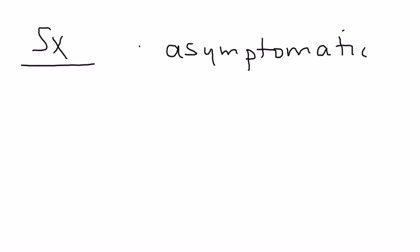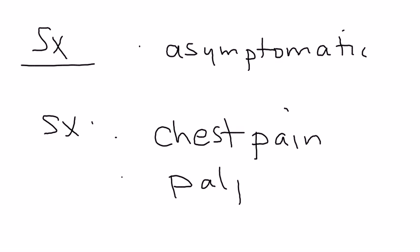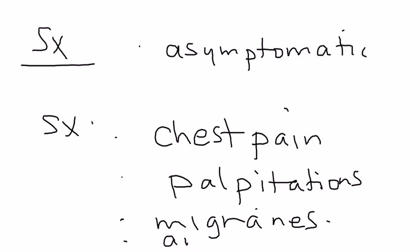So now let's get into some of the symptoms. Well, interestingly, a lot of times people live with this with no symptoms, asymptomatic. But if the person does have symptoms, then some of them will be as follows. The patient can present with chest pain, palpitations. That's a very common one. They can also present with migraines, which is an interesting symptom. Feelings of anxiety. Those are some of the symptoms.